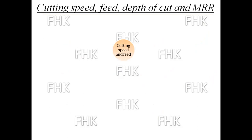Cutting speed and feed are both affected by: first, workpiece material; second, tool material; and third, tool geometry. Tool geometry includes the rake angle of the tool, the relief angle of the tool, and both the side cutting edge angle and end cutting edge angle. These directly affect the cutting speed and feed.